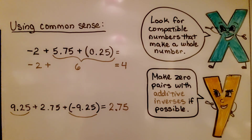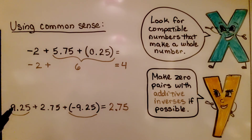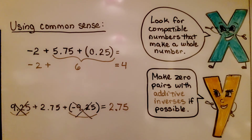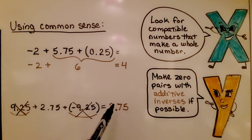We can also use common sense by making zero pairs with additive inverses if possible. In this equation we see positive 9.25 and negative 9.25 — they create a zero pair and cancel each other out. That leaves us with just 2.75, which is our sum.